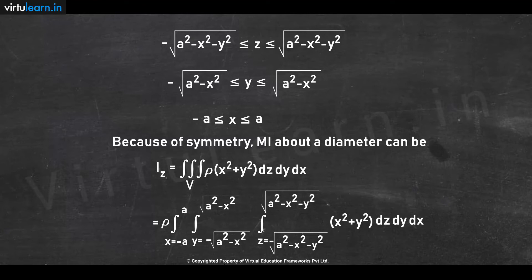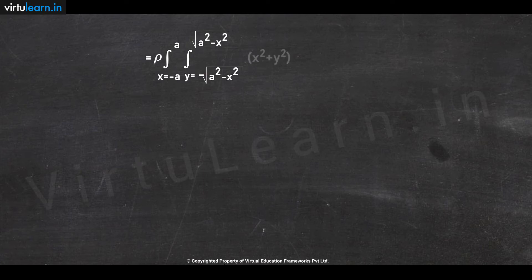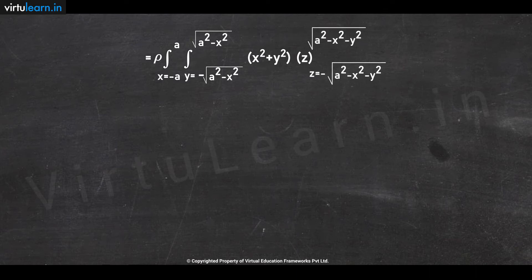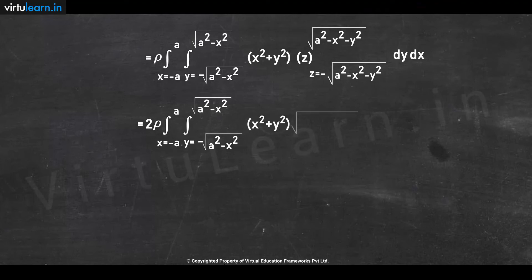We first integrate with respect to z. The integral of dz becomes z, so the integral becomes rho times the integral from x = −a to +a, integral from y = −root(a² − x²) to +root(a² − x²), of (x² + y²) times z, evaluated at the two z-limits, then dy dx. Substituting the limits for z gives 2 rho times the integral from x = −a to +a, integral from y = −root(a² − x²) to +root(a² − x²), of (x² + y²) times root(a² − x² − y²) dy dx.